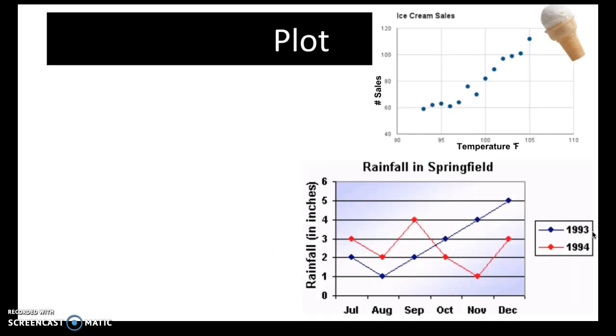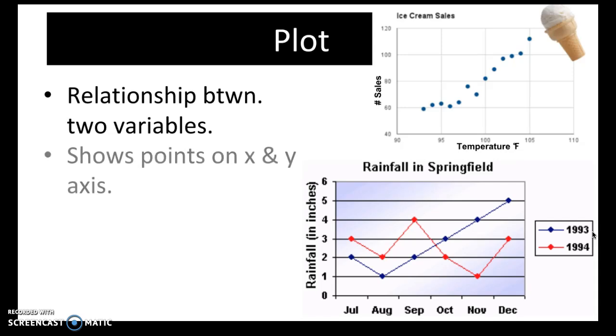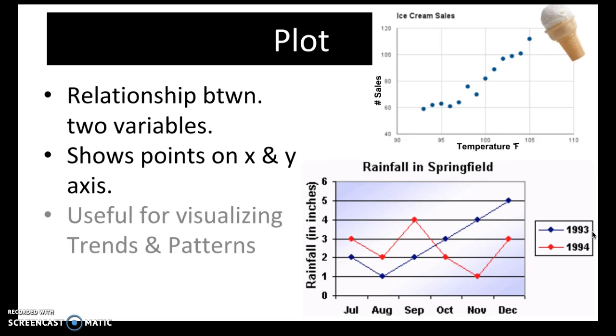The next representation is a plot. Like bar graphs, plots show relationship between two or sometimes more variables. This data is depicted as points on the x and y axis and sometimes those points are connected through lines. Plots are very useful for visualizing trends and patterns.